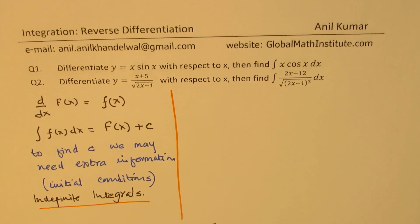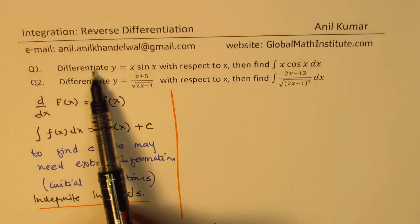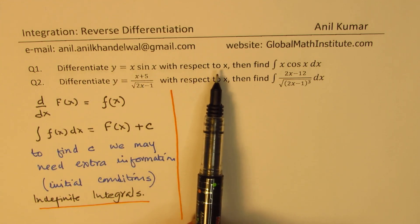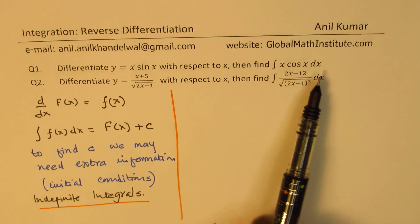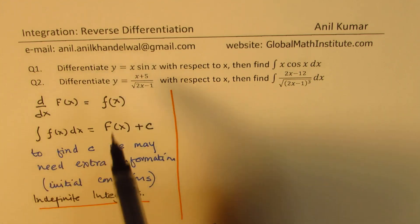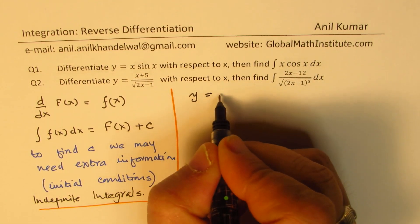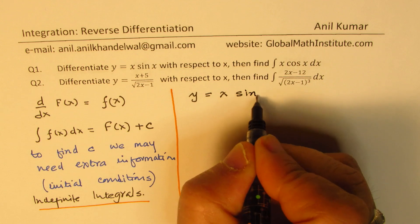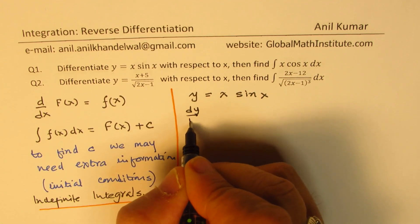We have two related questions. The first one is: differentiate y = x·sin(x) with respect to x, then find the integral of x·cos(x) dx. So a suggestion is being made — we are given y = x·sin(x), and we need to find dy/dx.